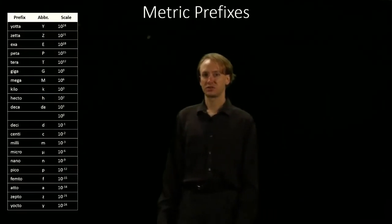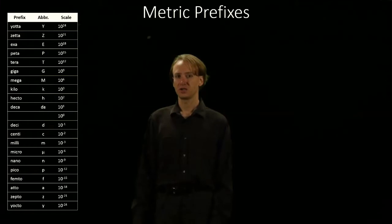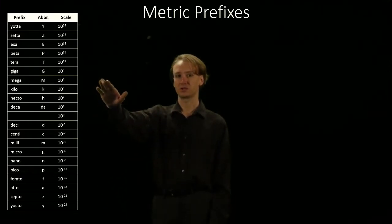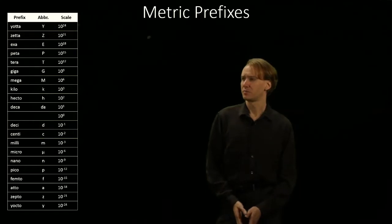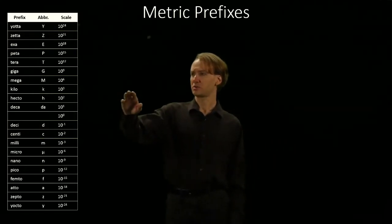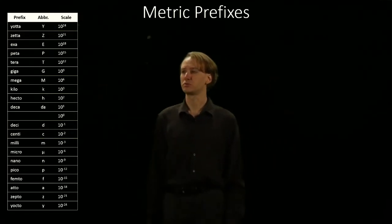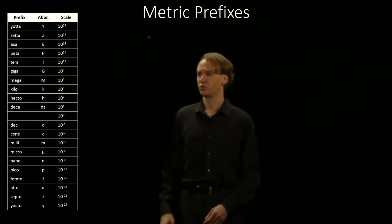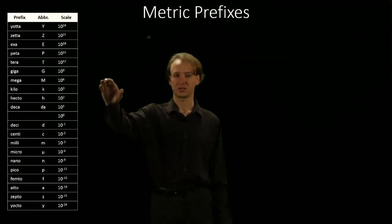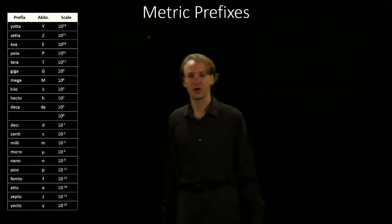For a couple more examples, the diameter of the Earth is about 12 megameters. So again, very large, but not too far off some of the scales that we're used to. We're used to seeing things like kilometers, so something in megameters isn't too far off. We could say that's 12,000 kilometers.